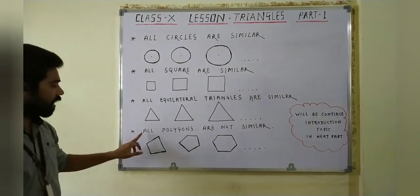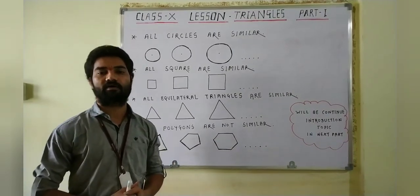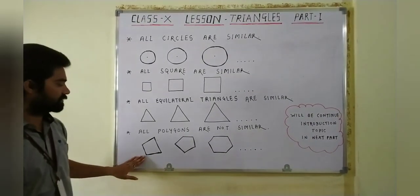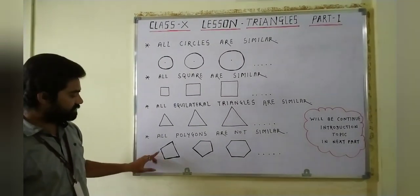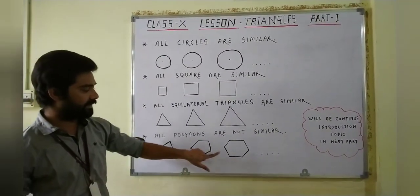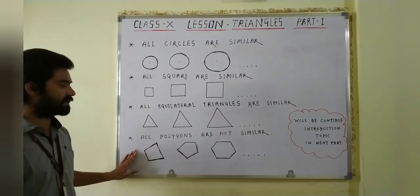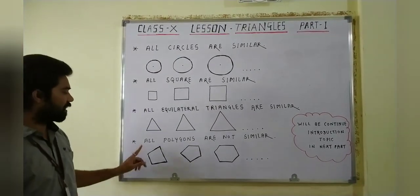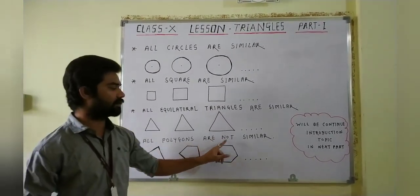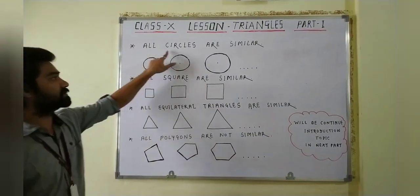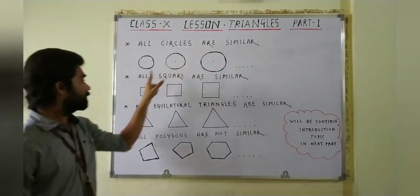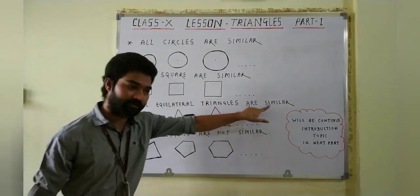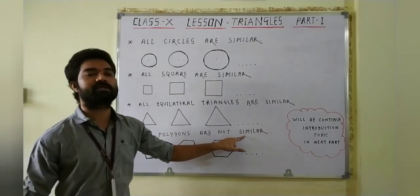The fourth point is: all polygons are not similar. Because polygons can have different shapes — quadrilateral, pentagon, hexagon, and so many others — they are not the same shape and same size. That's why all polygons are not similar. To summarize: all circles are similar, all squares are similar, all equilateral triangles are similar, but all polygons are not similar.